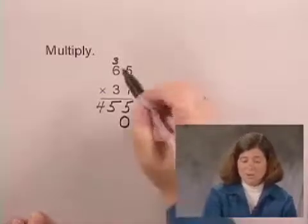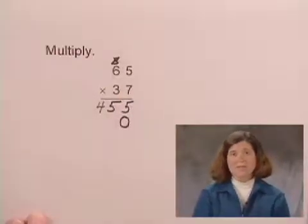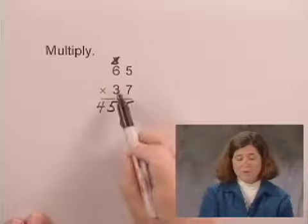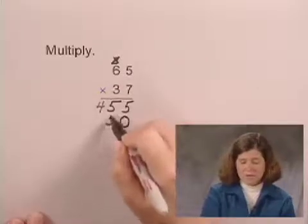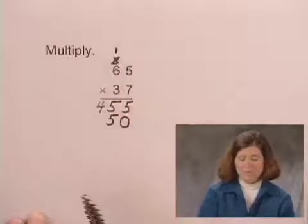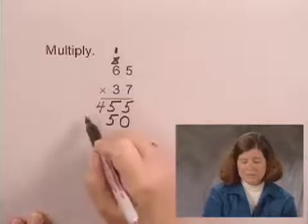In order to not get confused, I will cross off the 3 that I used above. And now multiply 65 times 3. 3 times 5 is 15, writing a 5 below and the 1 above the 6. 3 times 6 is 18, plus the 1 is 19.